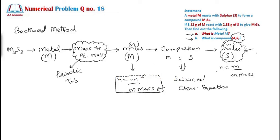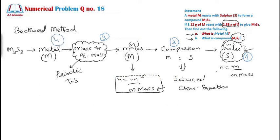We start by determining the moles of sulfur because we are given its mass. That is Step 1. Step 2 will be the molar comparison between sulfur and metal M from the balanced chemical equation. Once we have the moles of metal M, Step 3 is to determine the atomic mass of metal M using molar mass = mass / moles. From the atomic mass, we can identify metal M from the periodic table and then determine compound M2S3.